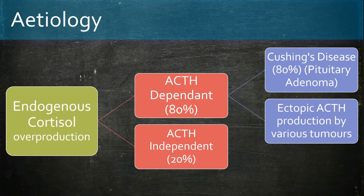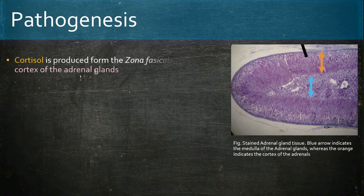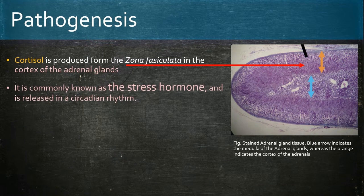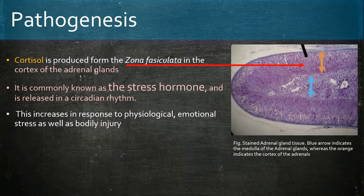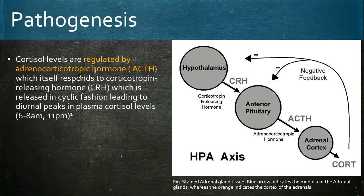Cortisol comes from the zona fasciculata in the cortex of the adrenal glands. It is commonly referred to as the stress hormone, being released more in response to physiological, emotional, and traumatic stress. Cortisol levels are regulated by ACTH from the anterior pituitary, which itself is regulated by CRH produced from the hypothalamus. Since CRH is released in a cyclic fashion, plasma cortisol levels peak during the morning around 6 to 8 AM and in the evening at 11 PM.